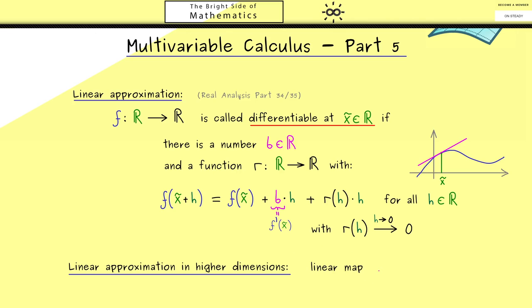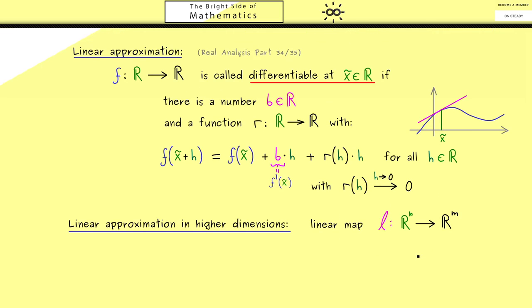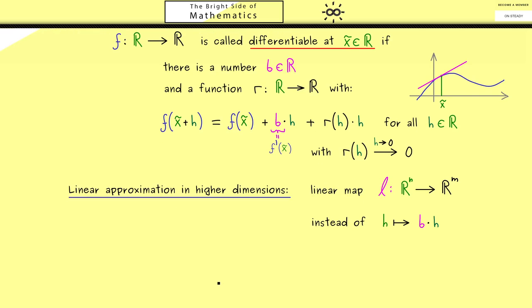In other words we will have a linear map l from R^n into R^m. And of course such a linear map could be represented by a matrix. More precisely here instead of the one dimensional map that sends h to b times h we now have a map that sends h to l times h. Hence you should see what in one dimension is the derivative is now a linear map.